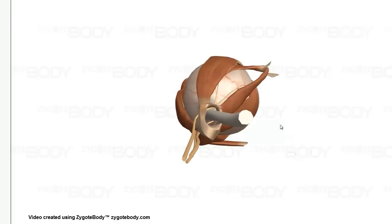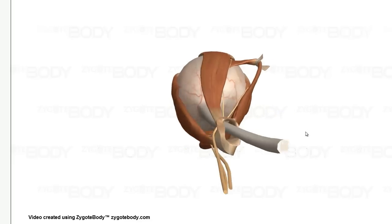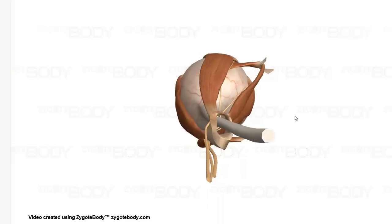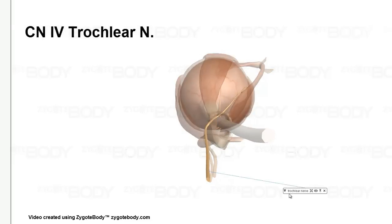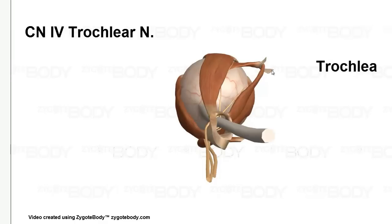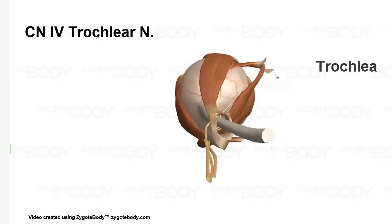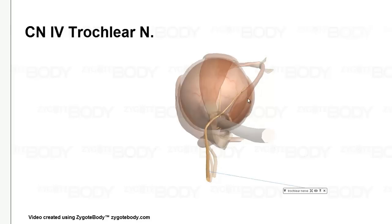Here's the optic nerve, and here's a little portion of the skull that it's going through — the optic canal. This first muscle here is the superior oblique. The superior oblique is going to be innervated by the trochlear nerve. Remember, this little structure right here is called the trochlea, so that might help you remember that the nerve that innervates the superior oblique is the trochlear nerve.